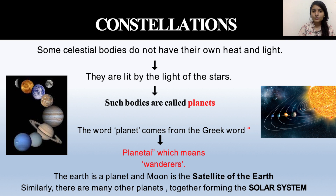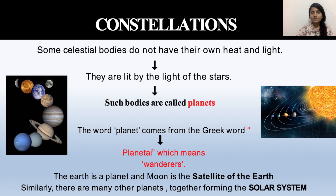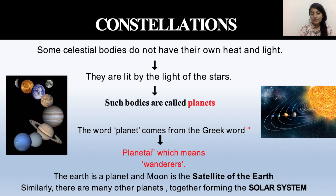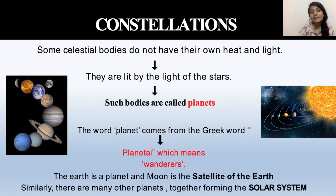There are some celestial bodies that don't have their own heat or light — we call them planets. The word 'planet' is a Greek word. Earth is a planet because it has no own heat or light, and the Moon is the natural satellite of the Earth.